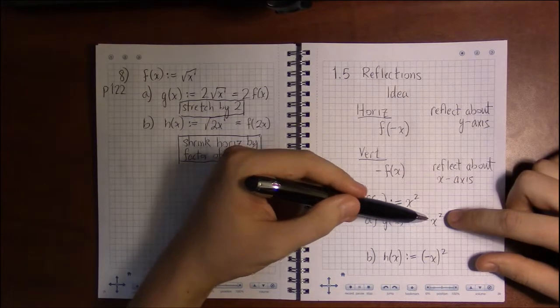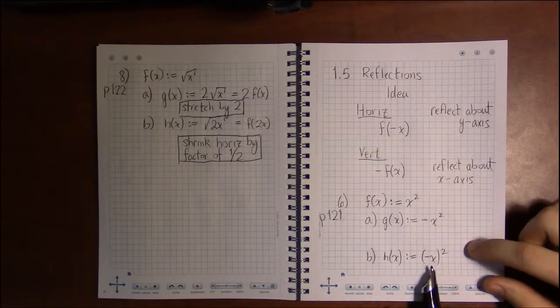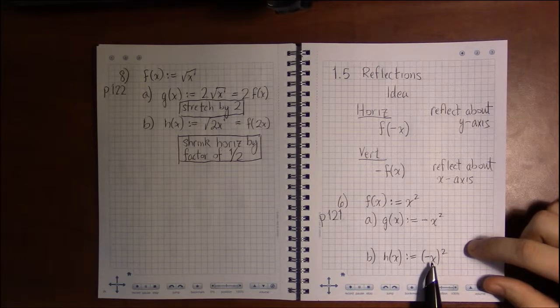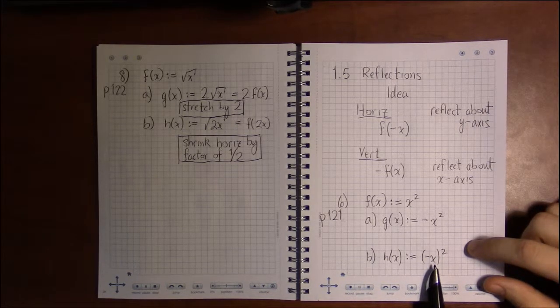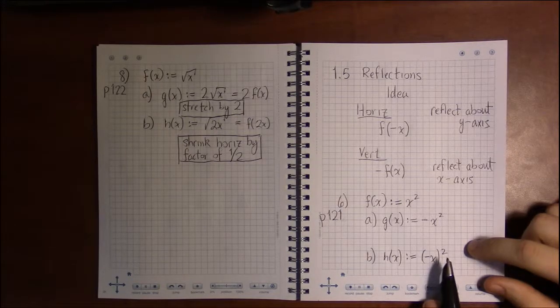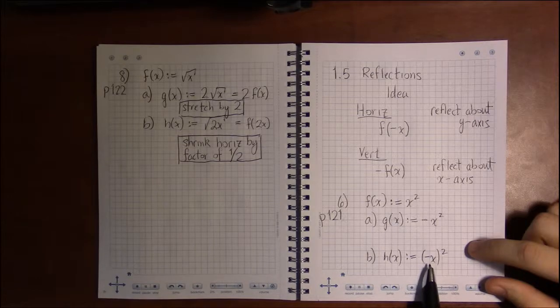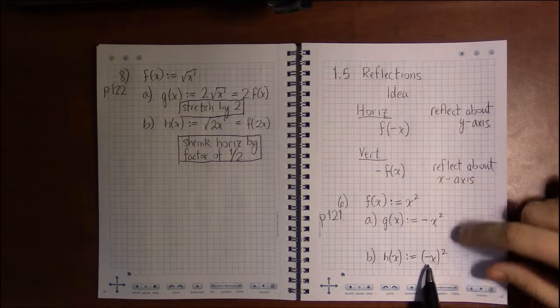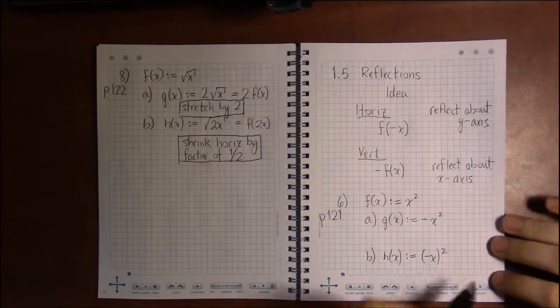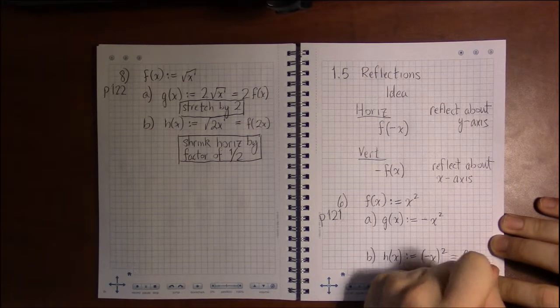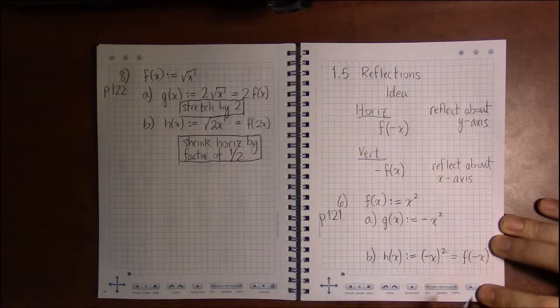Whereas here, with the parentheses around the minus x, the minus is the first thing to touch the x, and then the square will be the second thing. So here, h is where the minus is as close as it can be to the x. This is f of minus x.